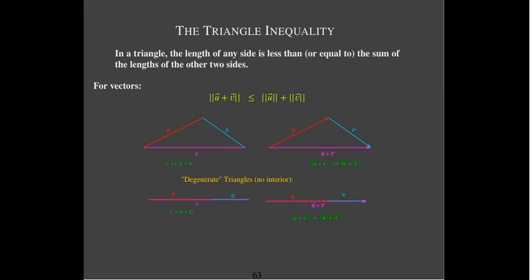The triangle inequality is not new — you should have seen this in some geometry class. It's a very simple idea: the length of any one side in a triangle, even a degenerate triangle where there's no interior, the sum of the lengths of the other two sides is always going to be greater than or equal to the length of the third side. Applying it to vectors, I take vectors u and v, put the tail of v at the head of u, so going from the tail of u to the head of v gives the vector u plus v.